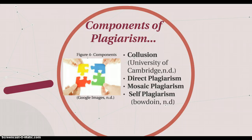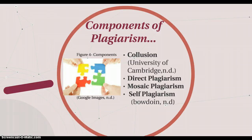The third type of plagiarism is self-plagiarism. This happens when a student submits their own work which they have previously done, or when they submit elements of their work which had previously been marked by another lecturer. This is seen as plagiarism as both lecturers have not said you can submit the same work.